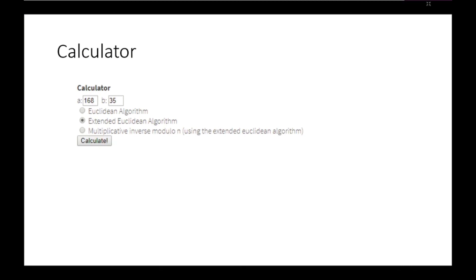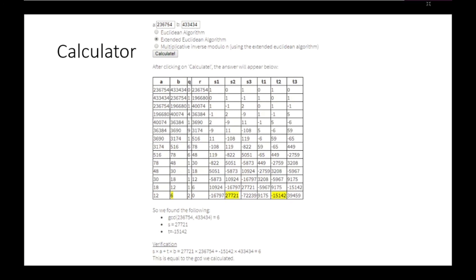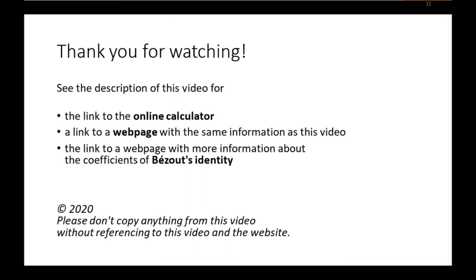If you want to practice more examples, or if you don't want to practice at all, you can use an online calculator. You put in any two numbers, make sure it's set to the extended Euclidean algorithm, click calculate, and the output will appear. The link to this online calculator is in the description of this video, along with a link to a webpage with the same information as this video. Good luck and bye bye.